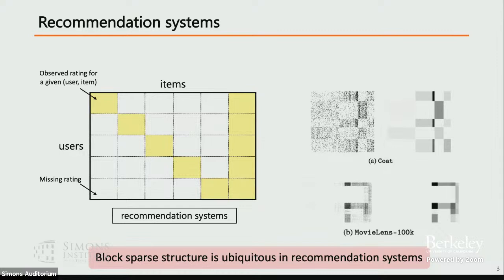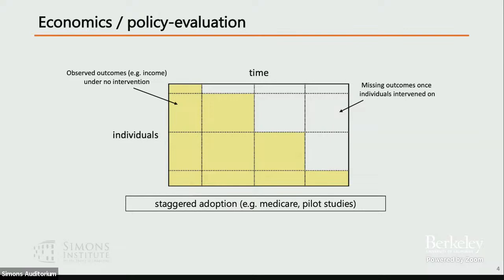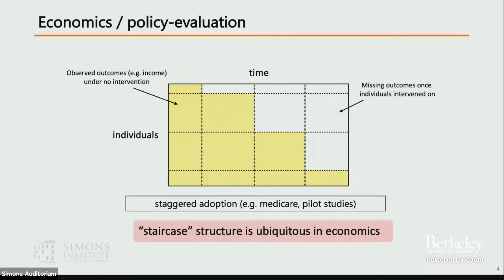Another setting, more familiar in economics and policy evaluation, is staggered adoption, where rows are different individuals, columns are time, and people adopt a policy in a staggered way. With Medicare, for example, people adopt at age 65. Before that you observe outcomes without Medicare, and you'd like to know what outcomes would be without Medicare after 65 — that's the missing part. This leads to a staircase structure in your data, which also shows up in pilot study experiment designs where you give an intervention to a small number of people and then decide whether to extend it more broadly.